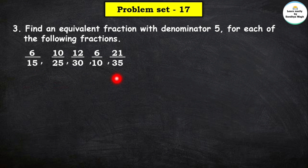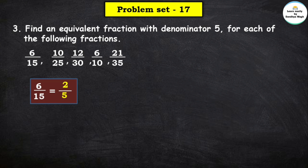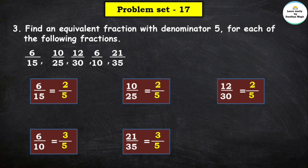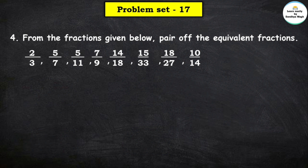So here we have found equivalent fractions with denominator 5 for all the given fractions: 6 upon 15 → 2 upon 5; 10 upon 25 → 2 upon 5; 12 upon 30 → 2 upon 5; 6 upon 10 → 3 upon 5; 21 upon 35 → 3 upon 5. Now next question, question number 4: From the fractions given below, find pairs of equivalent fractions.